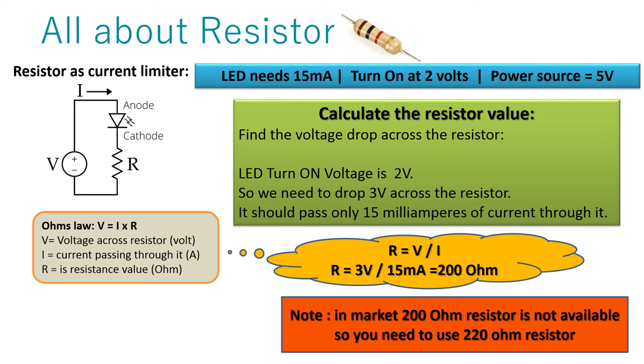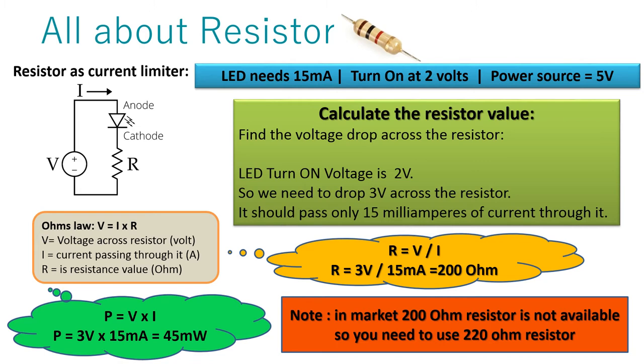Now we will calculate the desired power rating of the resistor by using the formula P equals VI. It is 45 mW. So we must use the resistor which can bear at least 45 mW of power dissipation.